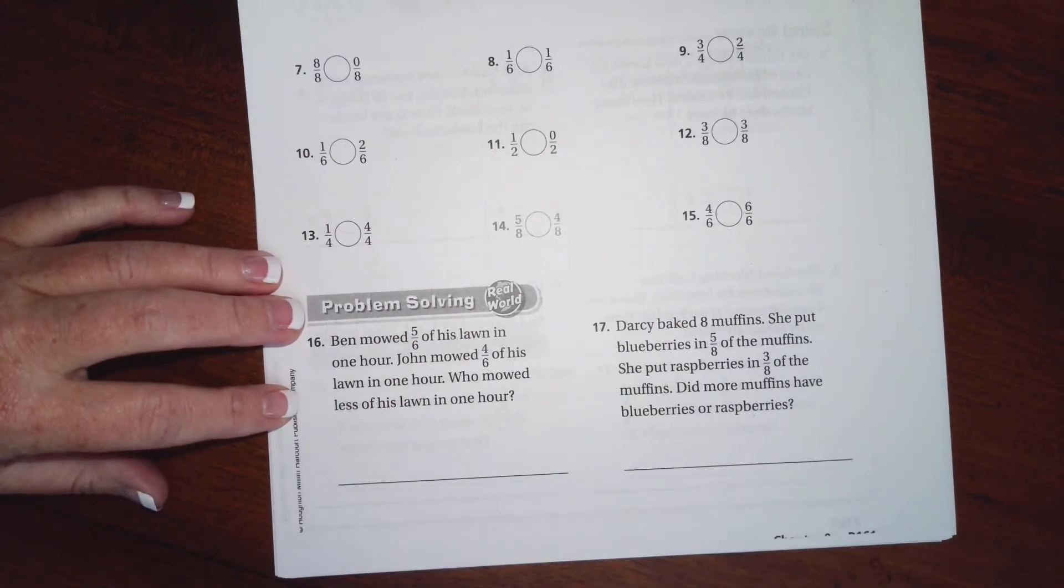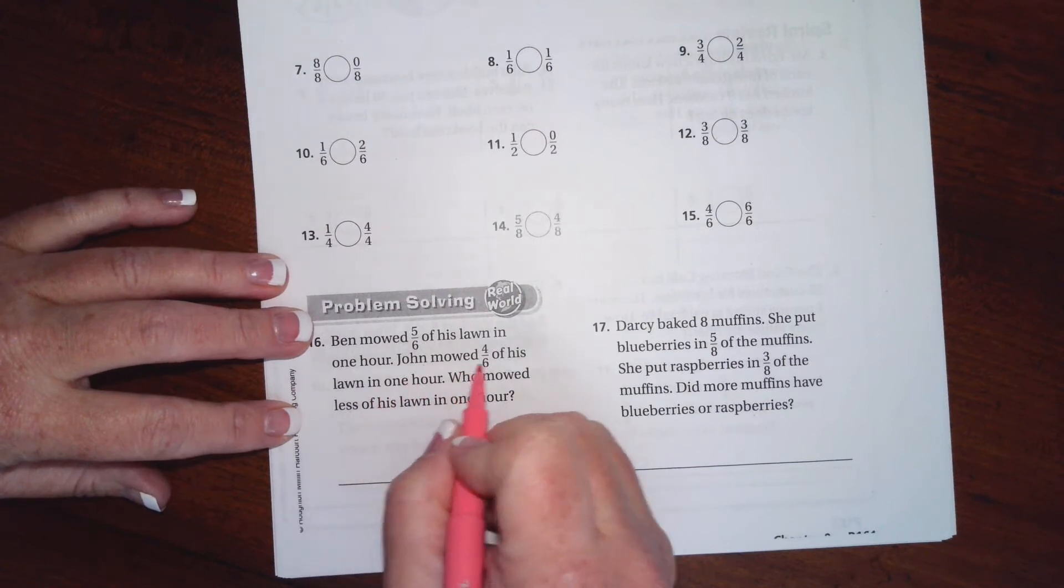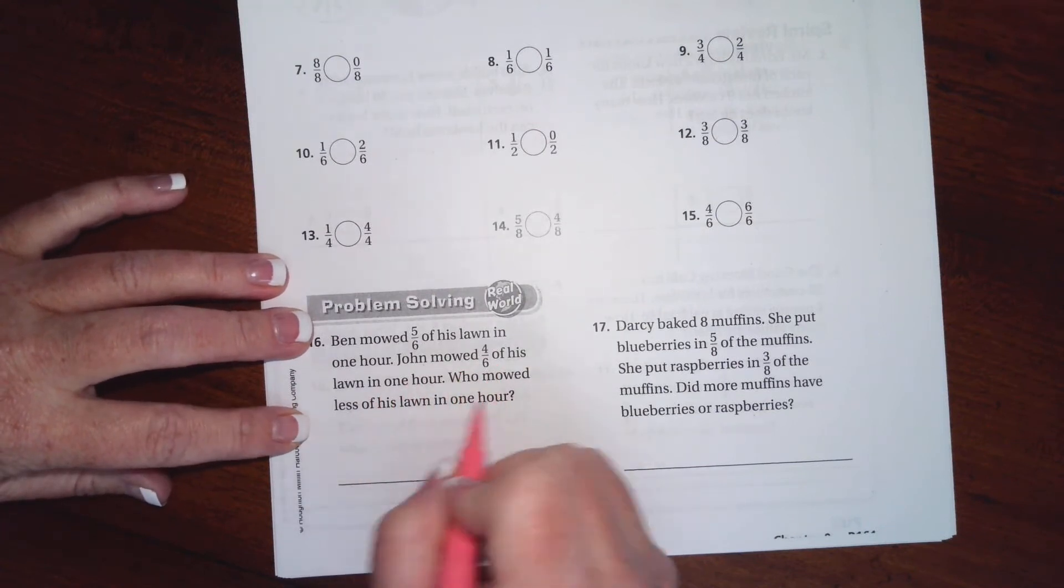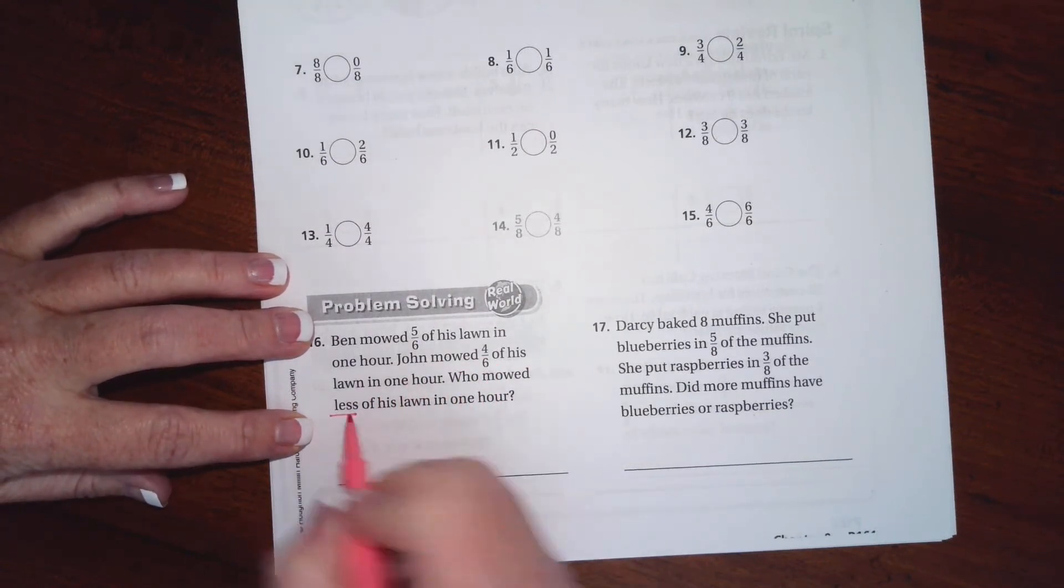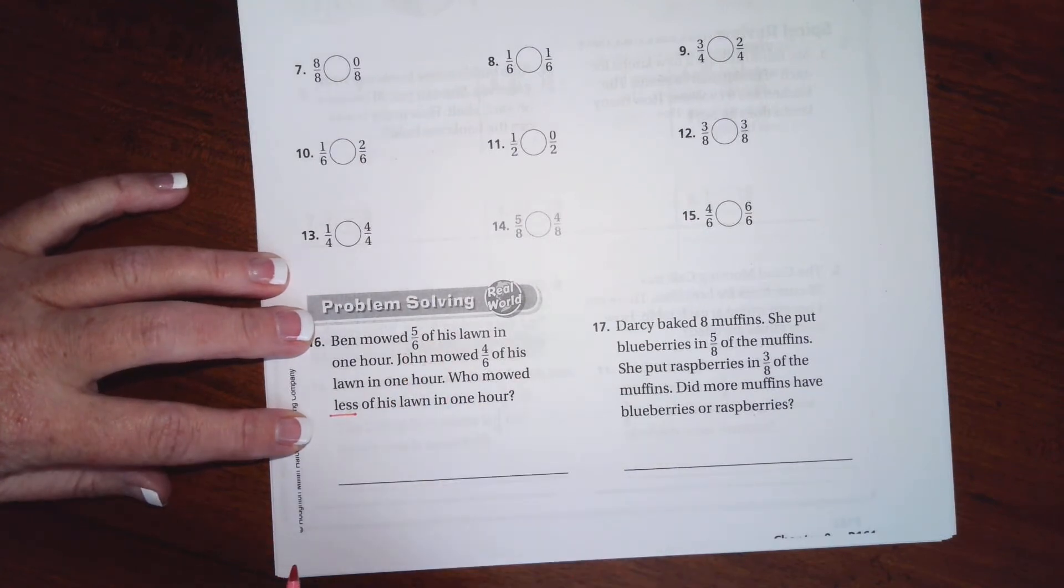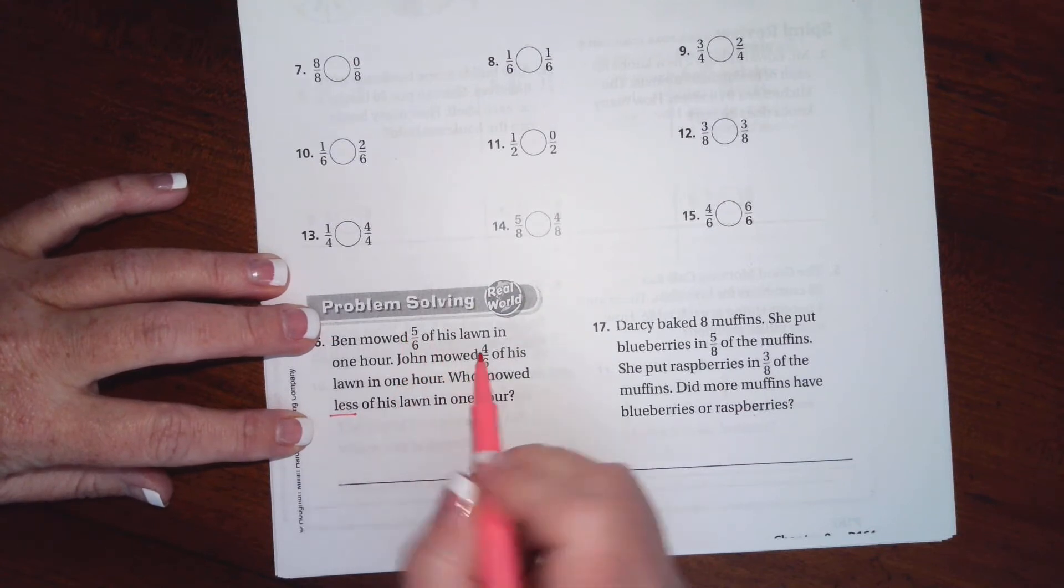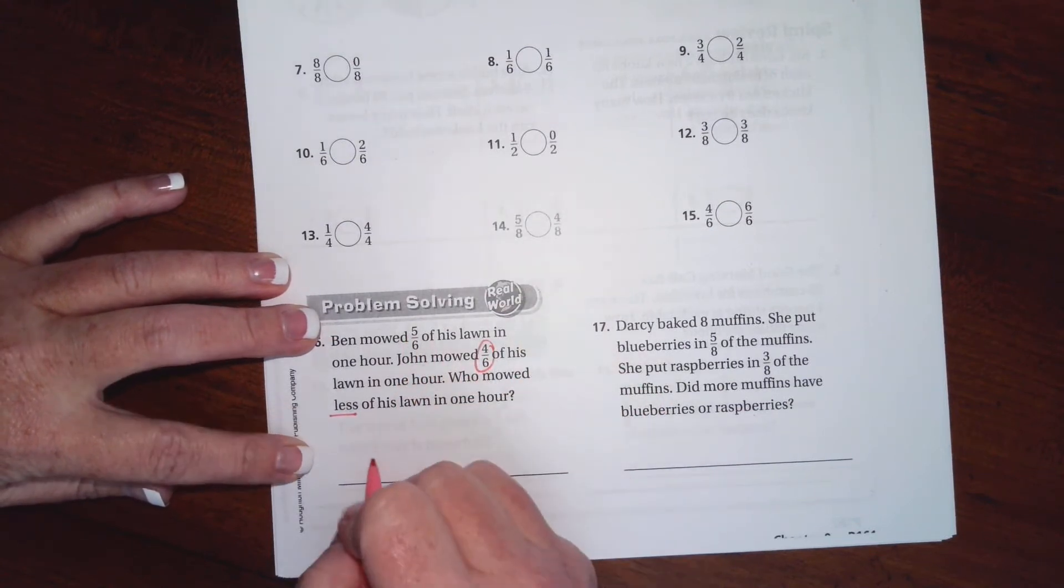It says Ben mowed five sixths of his lawn in one hour. John mowed four sixths of his lawn in one hour. Who mowed less of his lawn in one hour? So five sixths or four sixths, which one is smaller? Okay, denominators are the same, five and four. Four is going to be smaller, so that's going to be John.